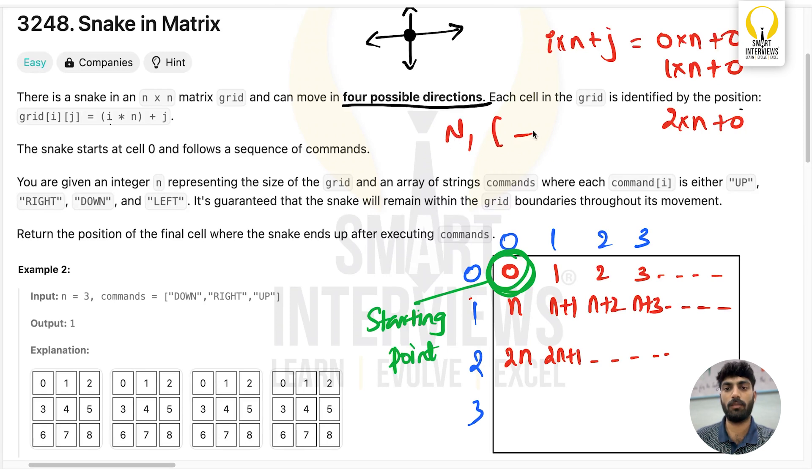You have a matrix of size n×n. You need to perform all these commands starting from 0. After performing all these commands, the snake will end at some cell. You need to return the position of that cell. Let's look at sample test case 2. You have a matrix of size 3×3.